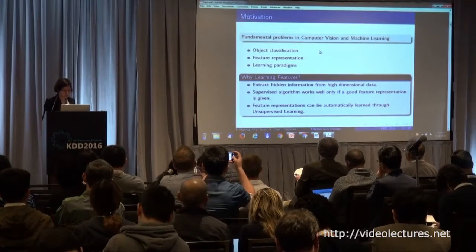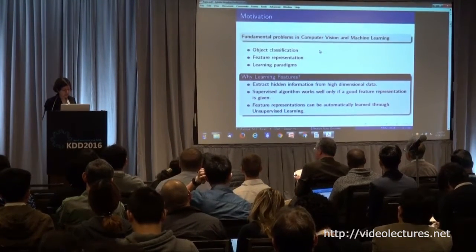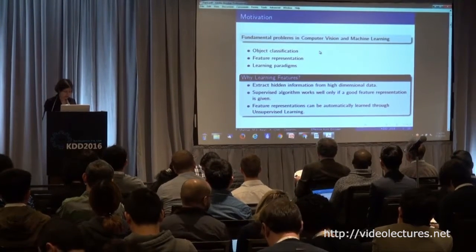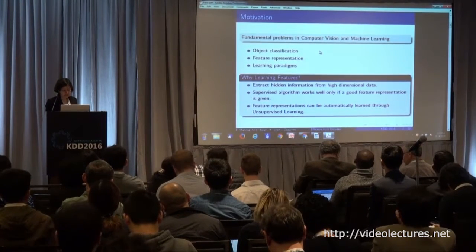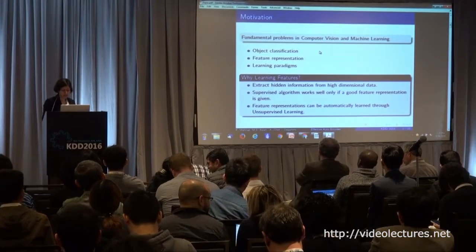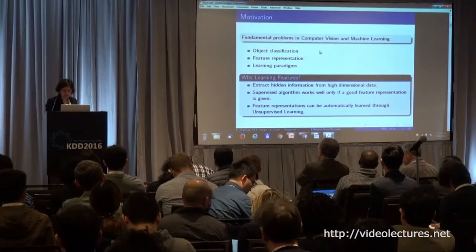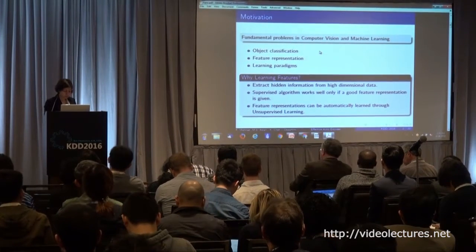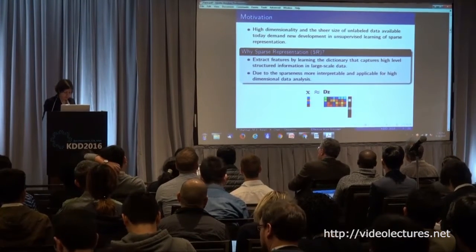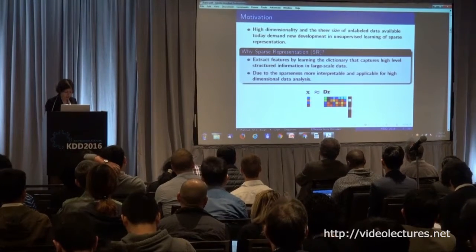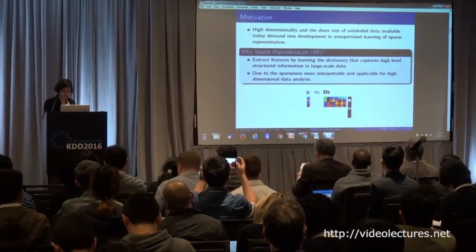Let's talk briefly about the motivation of the authors. In this work, the authors decided to work on learning features and also the sparse representation of features. Why learning features? Because in the domain of big data, if we learn features automatically through unsupervised learning, it will be more applicable because our data will have varied dimensions. And why sparse representation? Because sparseness will be more applicable when you have data with very high dimensionality.